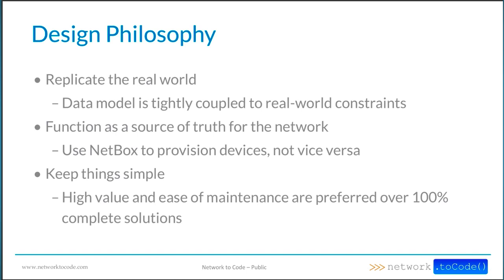Another example is that a physical circuit can only have two endpoints. This is a common point of confusion because a lot of people ask, 'How do I model an MPLS VPN network or an overlay where you have a multi-point virtual connection?' It's important to understand that what NetBox is doing today is modeling physical circuits, where you have two endpoints — either the local site and a provider, or a local site and a remote site via a provider. Overlay modeling is something that may come in the future, but it's on the quasi-roadmap for now.